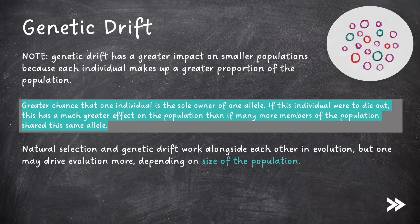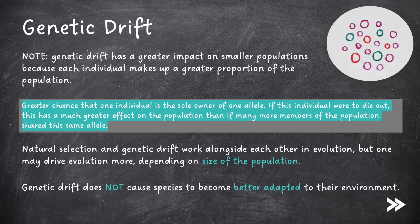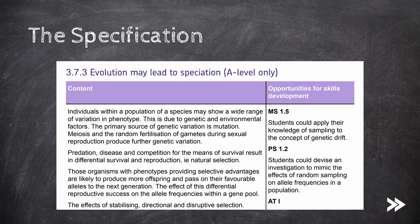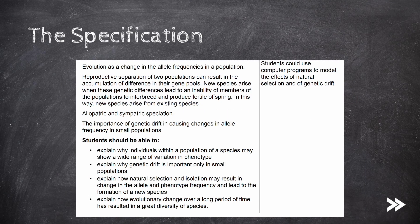Natural selection and genetic drift work alongside each other in driving evolution. However, one may drive evolution more depending on the size of the population. Genetic drift doesn't cause species to become better adapted to their environment. To summarise: we know that individuals within a population may show a wide range of variation in phenotype due to environmental and genetic factors; mutations are the primary source of genetic variation; we now know about disruptive selection in addition to stabilising and directional selection; we can define evolution as a change in allele frequencies in a population; and we now know how speciation works, in particular allopatric and sympatric speciation, as well as the importance of genetic drift in causing changes in allele frequency in small populations.